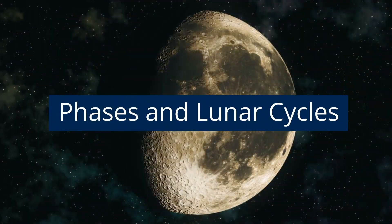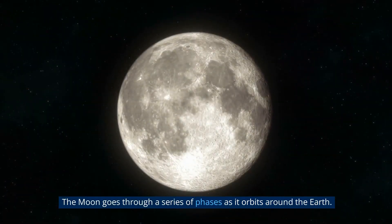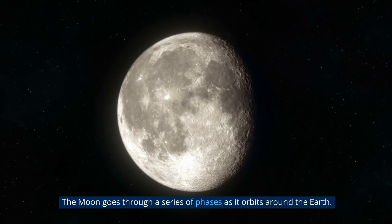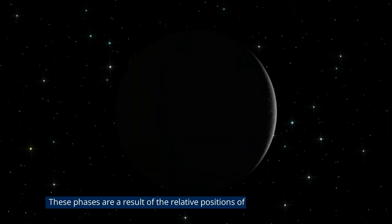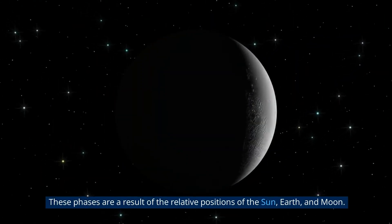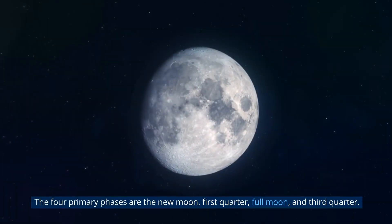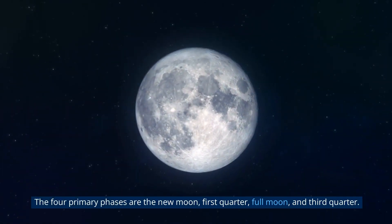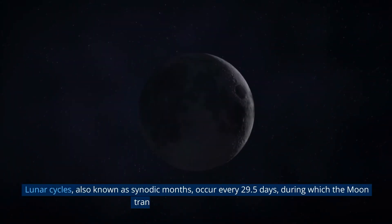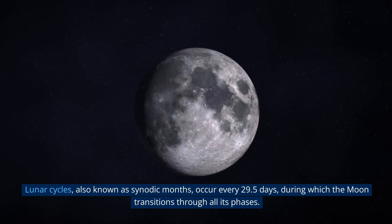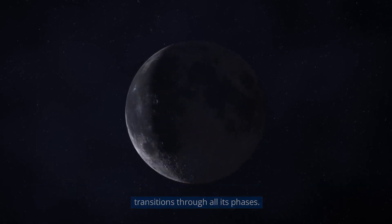Phases and Lunar Cycles. The Moon goes through a series of phases as it orbits around the Earth. These phases are a result of the relative positions of the Sun, Earth, and Moon. The four primary phases are the New Moon, First Quarter, Full Moon, and Third Quarter. Lunar cycles, also known as synodic months, occur every 29.5 days, during which the Moon transitions through all its phases.